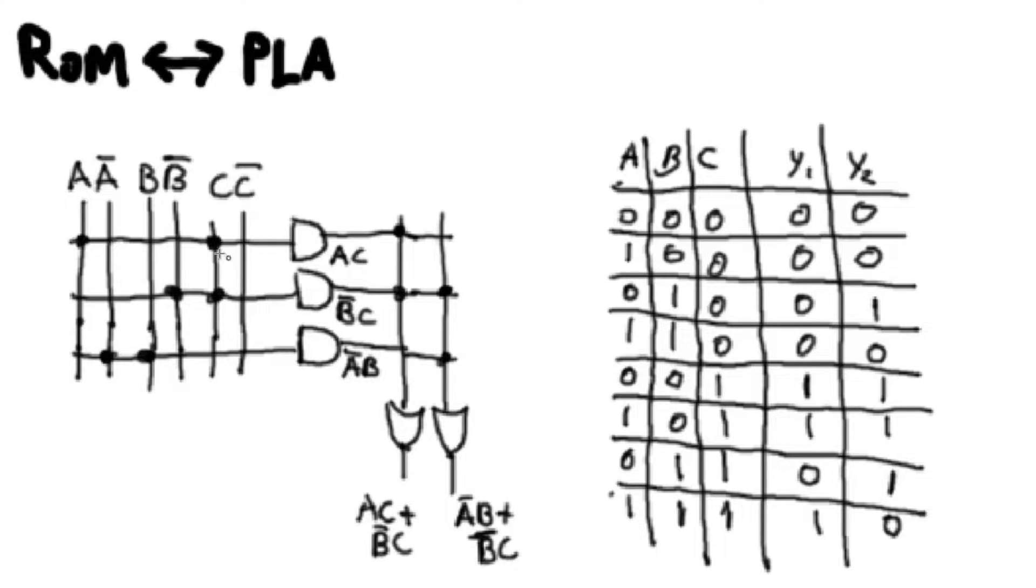But if you actually look, if you think about this reasonably, when you go through every combination of inputs here, you're going to get a particular combination of outputs here. And that can be translated into a table. So here we have all our inputs, here we have all our outputs, and as we go through our different combinations of inputs, we get this particular sequence of outputs.